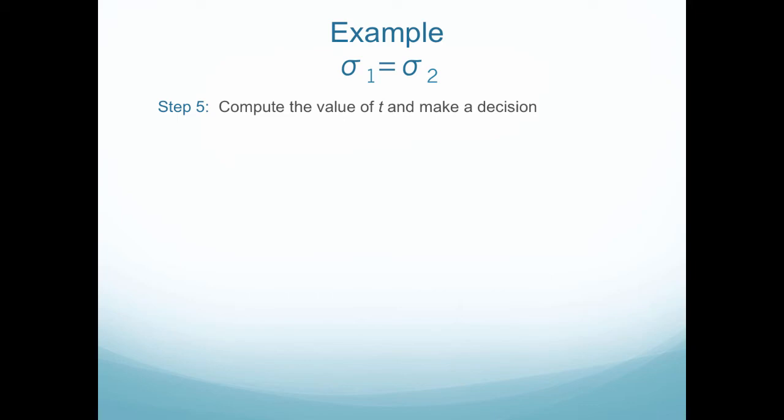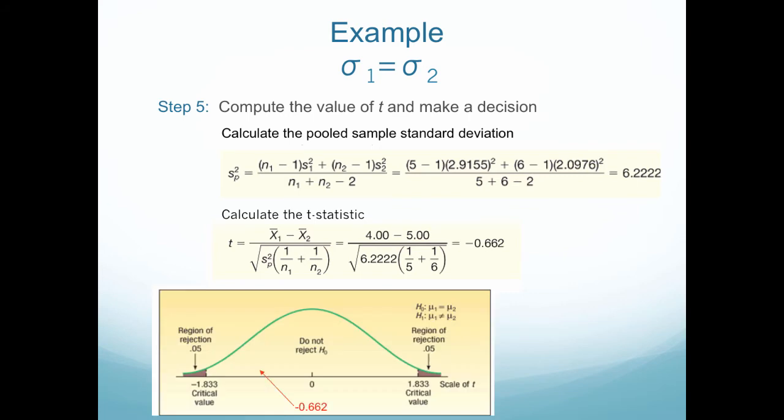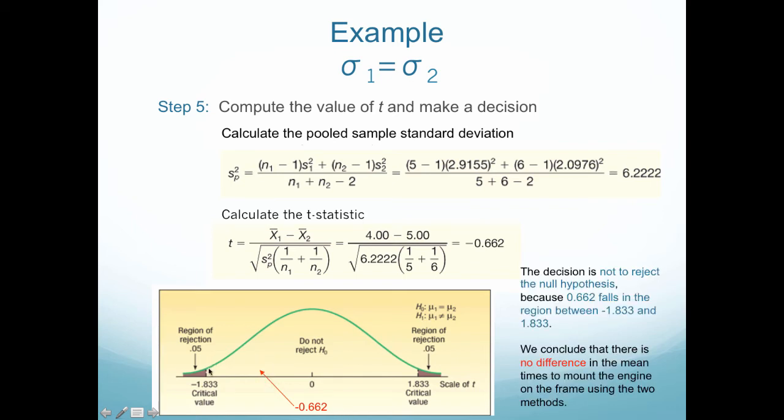So next step, I would compute the actual value of t and then make a decision. So remember the value I found before was just a critical value. It wasn't an actual value. So here I'm going to calculate the pooled sample standard deviation, which is so beautiful and it gives me this value. So 6.222. So I would then calculate the test statistic, or the t-statistic in this case, and I would then get a t-value of negative 0.662. So let's see what that's like. Negative 0.662 is about right here on this curve. Because that falls in this region between my critical values, I would not reject my null hypothesis. So basically what that means is I could conclude there's no difference in the mean times it would take to mount the engine on a frame using these two different methods. So maybe then you go to the company and say, choose whichever one you like or whichever one costs less money because there isn't a statistical difference between the two.